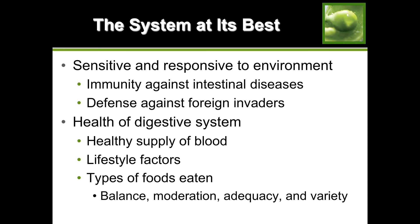The system at its best: it is very sensitive and responds to the environment. You get immunity against intestinal diseases and defense against foreign invaders, but it is very sensitive - that's why you get food poisoning. The health of your digestive system depends on a healthy blood supply, lifestyle factors such as physical activity, and the types of food eaten. Interestingly, the majority of your immune system is in your gut, so if you don't have a healthy digestion you won't have a healthy immune system.